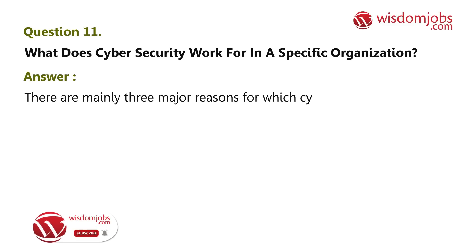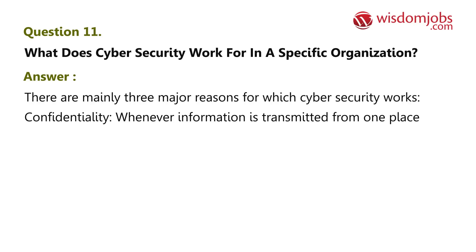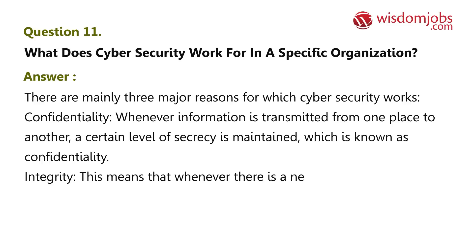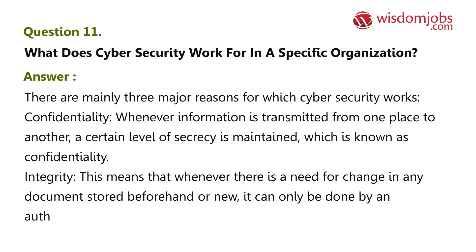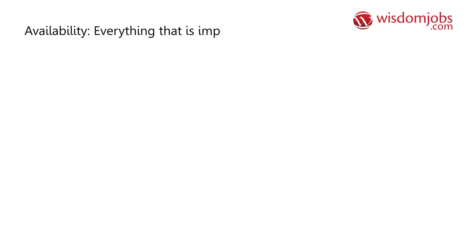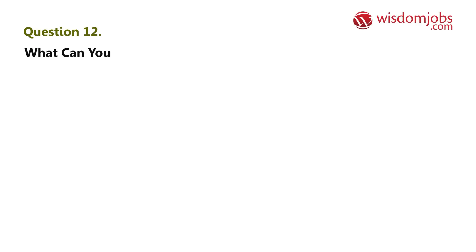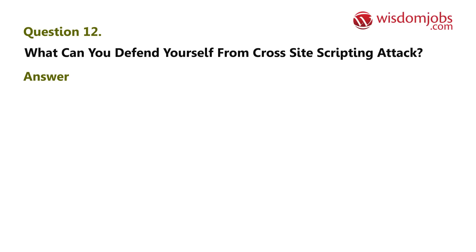Question eleven: what does cybersecurity work for in a specific organization? Answer: there are mainly three major reasons — confidentiality: whenever information is transmitted, a certain level of secrecy is maintained; integrity: changes to any document can only be done by an authorized person with a proper and secure mechanism; availability: everything important should be readily available to authorized people, otherwise the information serves no use.